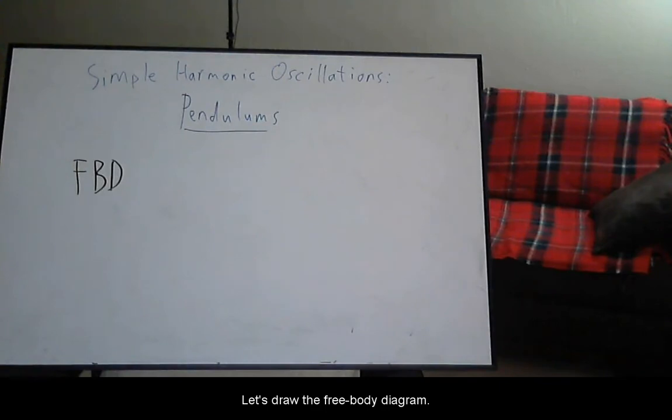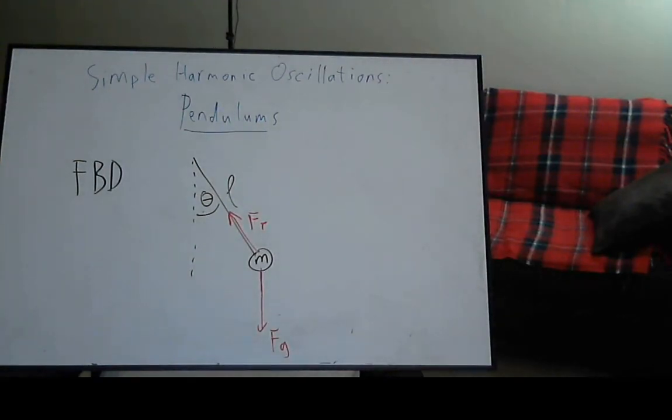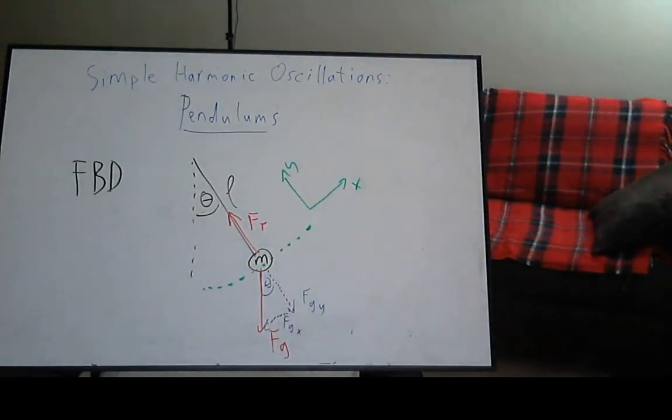Let's draw the free-bodied diagram. We have mass M on a length of string L, displaced from vertical by angle theta. The forces on it are tension and gravity. Because its path is tilted at this point, we will set up a coordinate system that is also tilted.